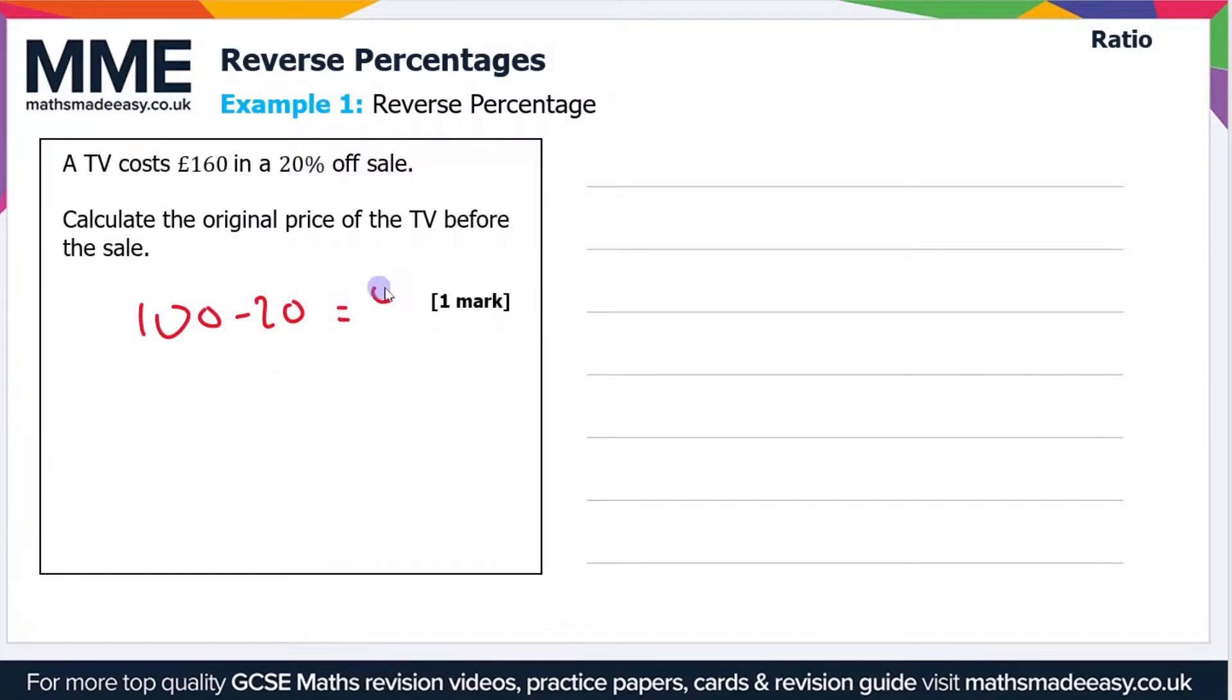So this value of £160 is 80% of the original value. If we divide by 80, this will give us 1%. So 160 divided by 80 is going to be £2. Then we can times this 1% by 100, so 100% is equal to 2 times 100, which is £200.